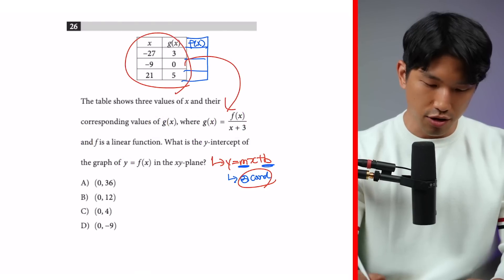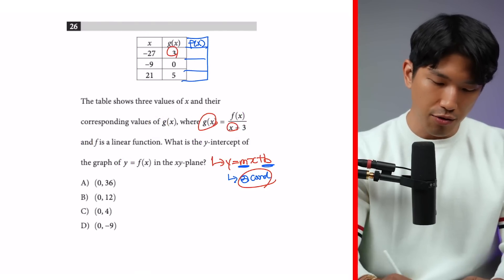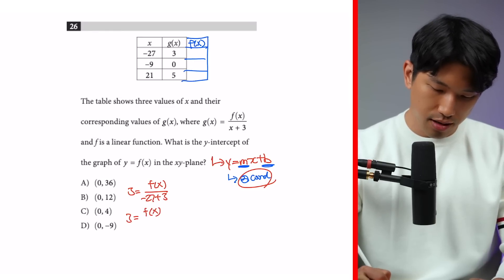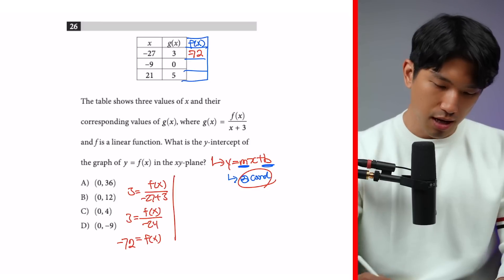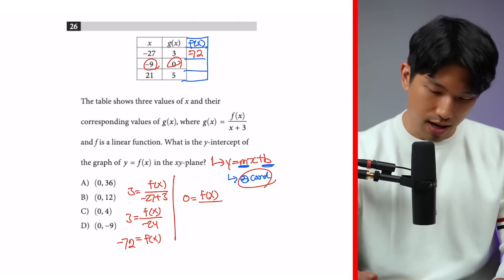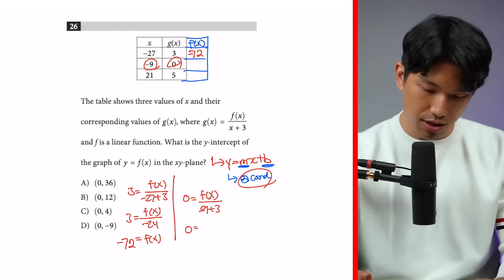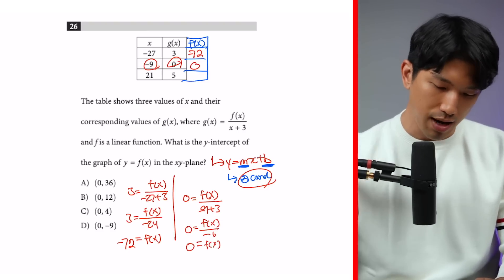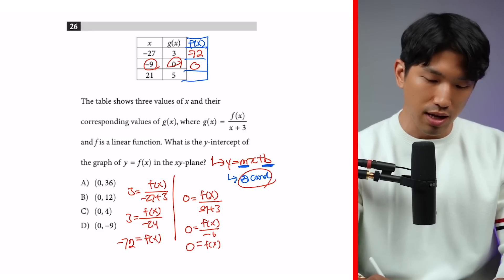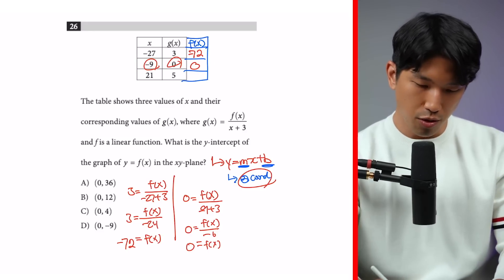Let's find the coordinates. When g of x is 3, x is negative 27: 3 equals f of x divided by negative 27 plus 3, which is negative 24, so f of x equals negative 72. For the second coordinate, when g of x is 0, x is negative 9: 0 equals f of x divided by negative 9 plus 3, which is negative 6, so f of x equals 0. We now have the two coordinates we need.